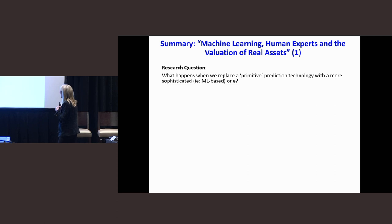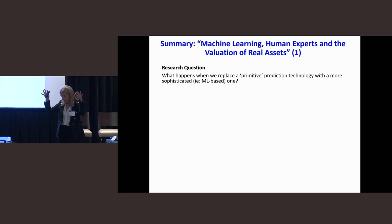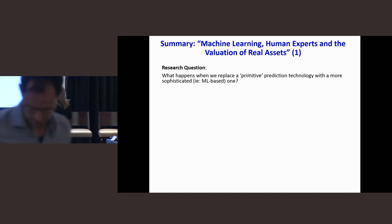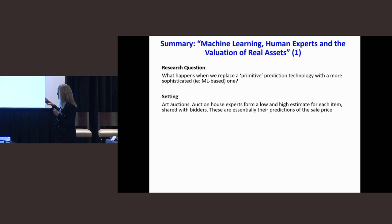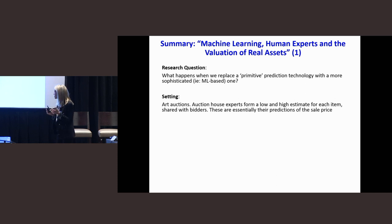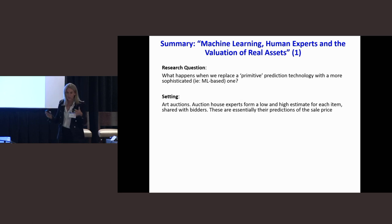I want to turn to the other two papers. First, the art paper. The research question, taken up a level from what the author presented: what happens when we replace a primitive prediction technology with a more sophisticated machine learning-based one? In this case, the primitive prediction technology is the auction house expert. Their setting was art auctions — every auction house has an expert who forms a high and a low estimate of what a painting will sell for, and that prediction is shared with bidders before the auction takes place.